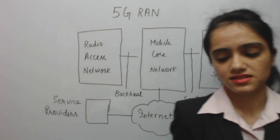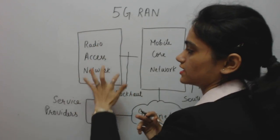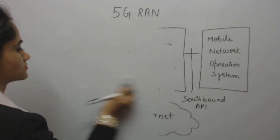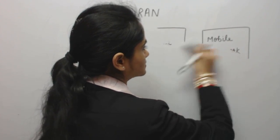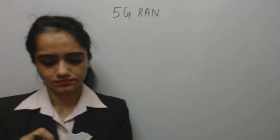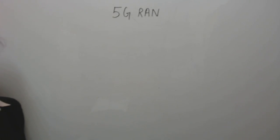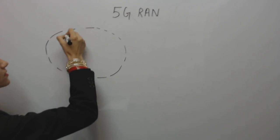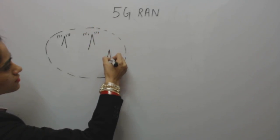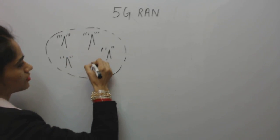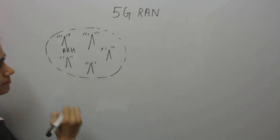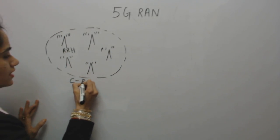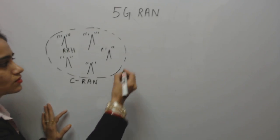So this is the model of the 5G network architecture. Now let's discuss 5G RAN in detail. The 5G Radio Access Network comprises 5G Remote Radio Heads, known as RRH. When the RRH is located in the cloud, the 5G Radio Access Network is called C-RAN, or Cloud Radio Access Network.